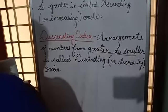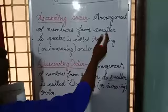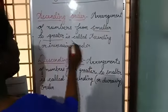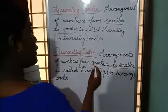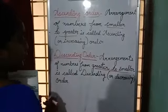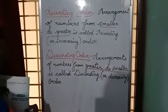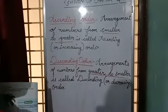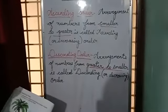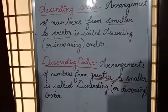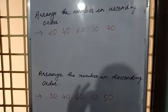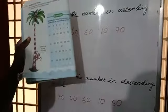I repeat once again: arrangement of numbers from smaller to greater is called ascending order or increasing order. And arrangement of numbers from greater to smaller is called descending or decreasing order. You have to learn all this topic and all this definition.